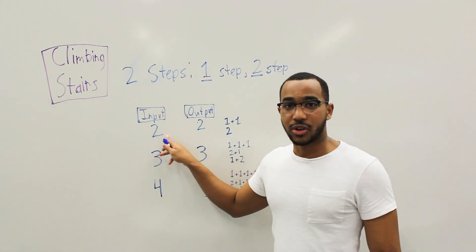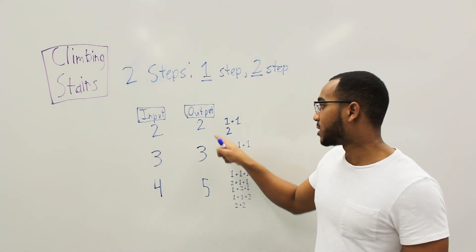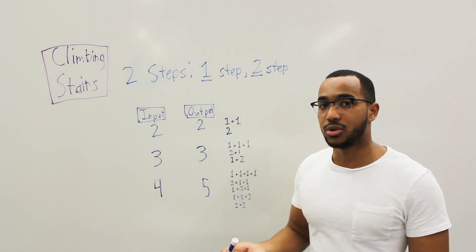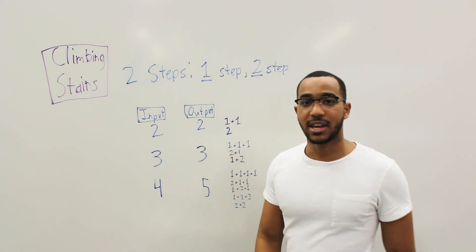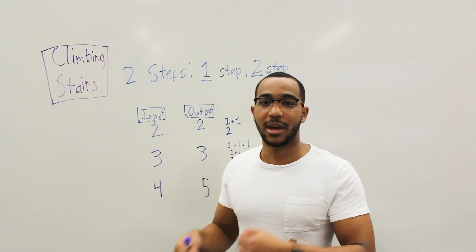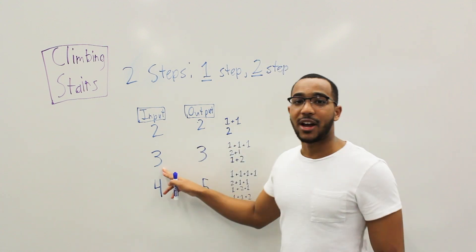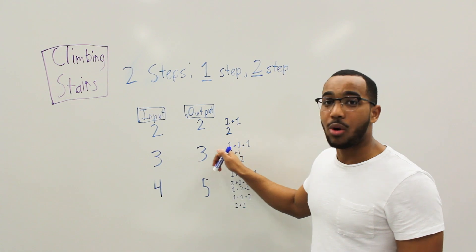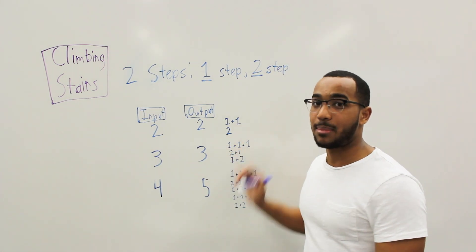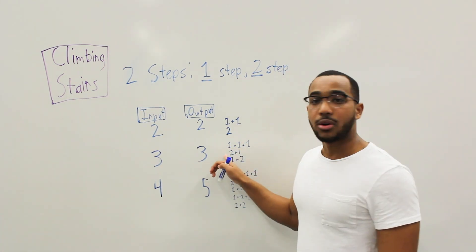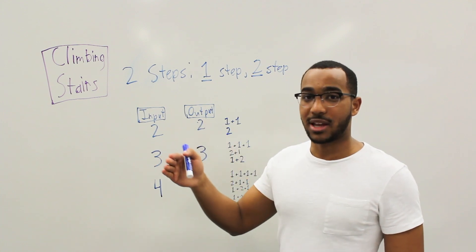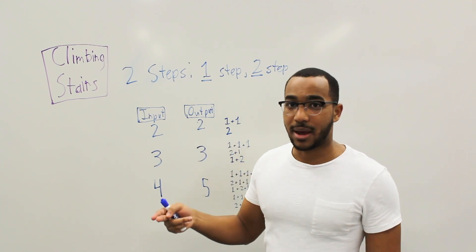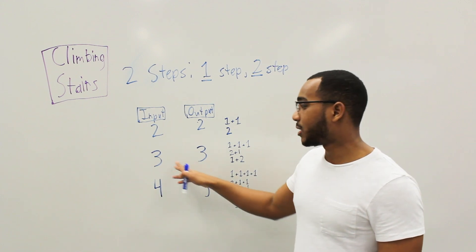If I have to traverse two steps, I can take a one-step and a one-step that adds up to two steps, or I can just take my two-step. If I have to traverse three steps, I can go one-step, one-step, one-step; I can also do a two-step and then a one-step; or I can take the one-step first and then do the two-step. That's three unique ways.